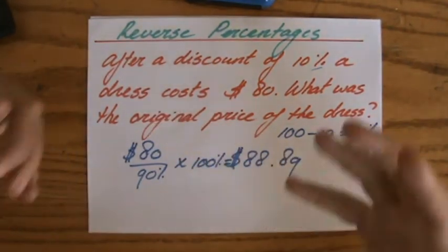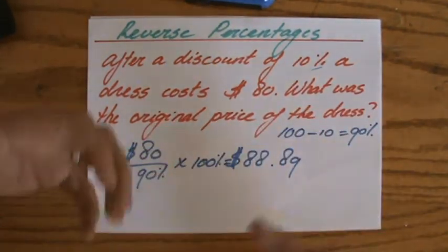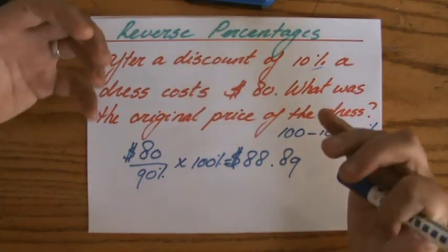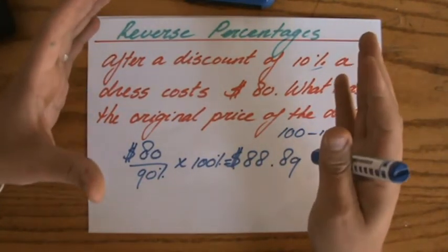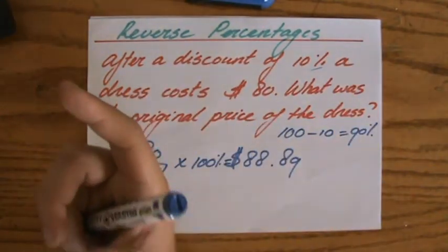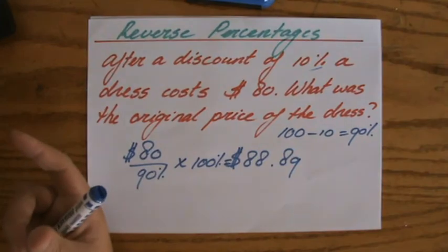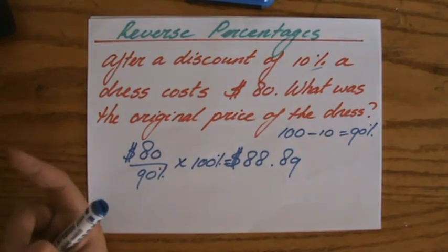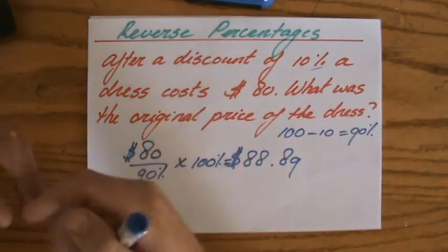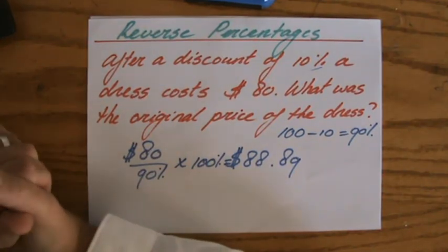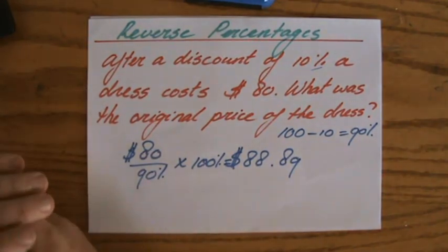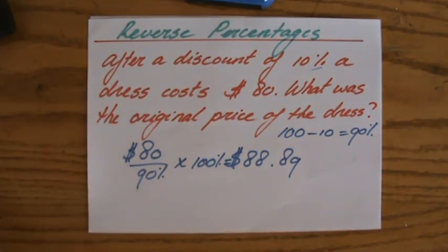This is something you have to practice, so you're really able to distinguish between a reverse percentage problem and an ordinary percentage problem — where they give you a price and a discount and you calculate the new price. I have a couple more example questions for you, and I'll see you there.